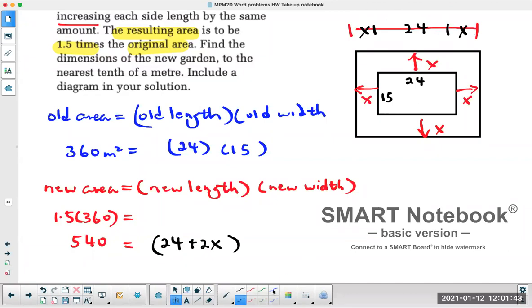What about the new width? Well, this is the new width. This to there is 15. And again, I need this little bit and that little bit being added onto the old width. So the new width is going to be 15 plus 2x.